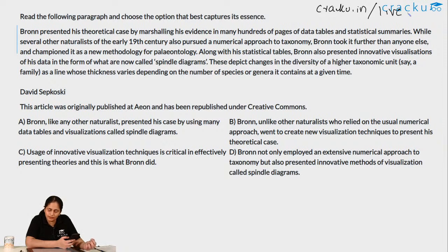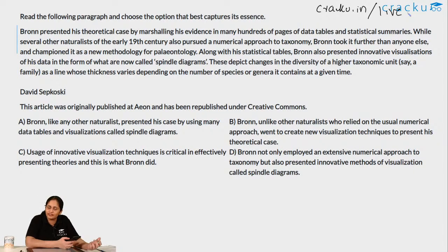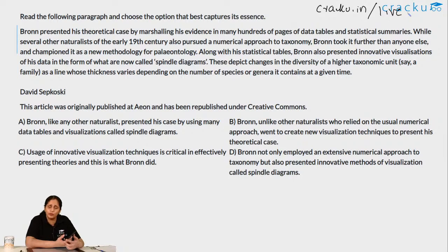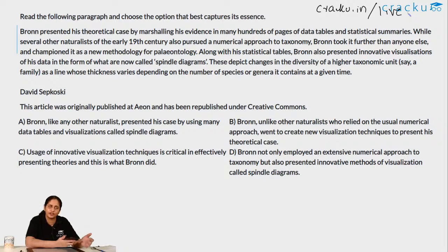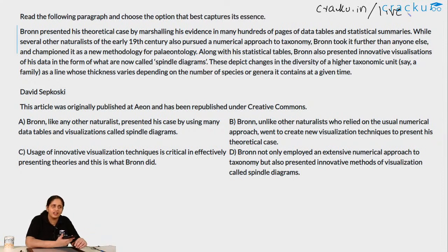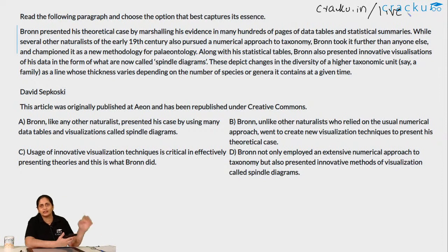On whether to prepare for other VA question types like para-completion that were asked in previous years of CAT: I really don't think there is a high probability of those coming. I won't rule it out, but I mostly — like 95% — expect the paper to be RC plus para-jumbles plus OOC plus para-summary. I think they already changed the pattern by reducing questions and I don't think they will change it further. One thing we can do is wait for the CAT tutorial to come out — if it shows fact-inference-judgment or para-completion then you can work on it. But for now, stick to RC, para-jumbles, OOC, and para-summary.